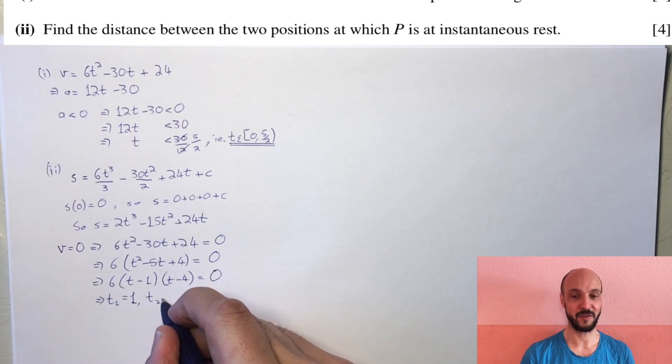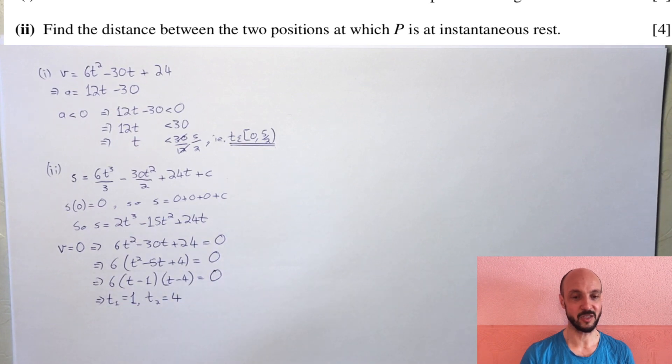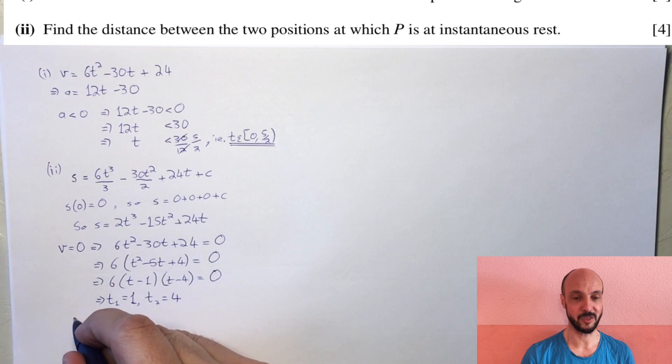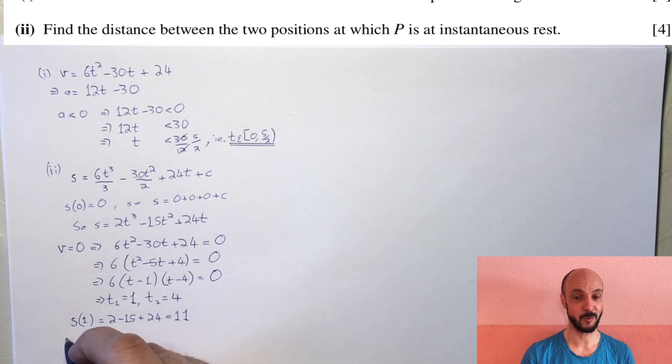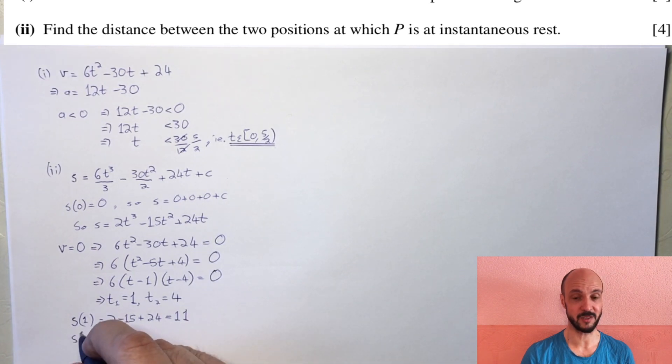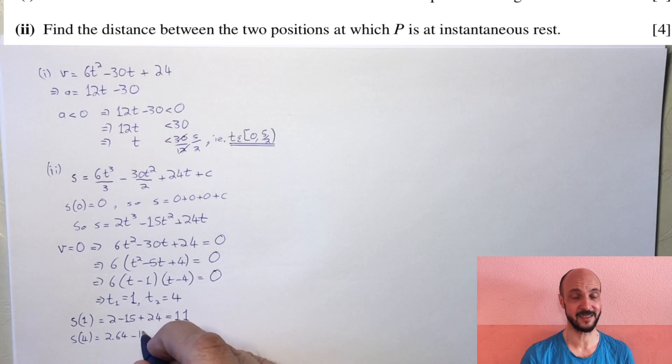To find the distance travelled between those times, we substitute 4 and 1 into our distance equation. Substituting 4 gives 2 times 64 minus 15 times 16 plus 24 times 4, which equals minus 16. This is displacement, so 16 to the left.